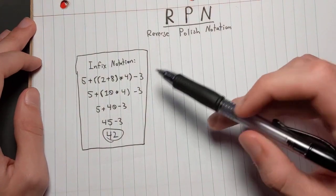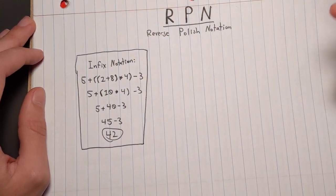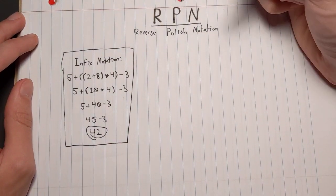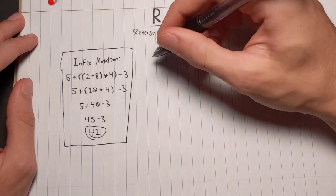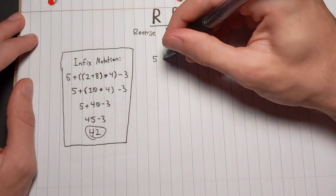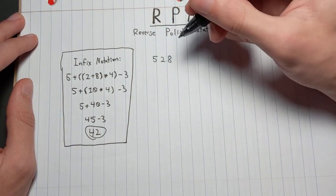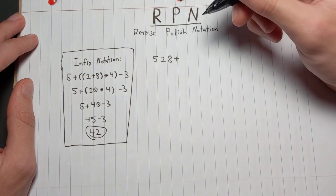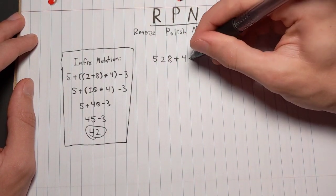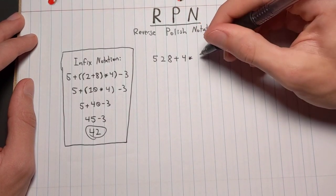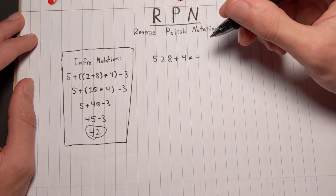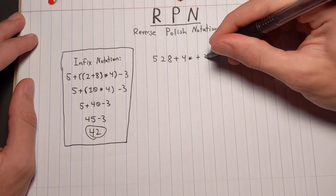To do that, we have to rewrite the equation a bit. In RPN, we write it as: 5, 2, 8, plus, 4, times, plus, 3, minus.